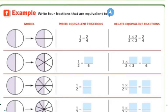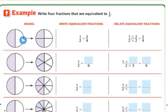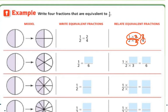Example: write 4 fractions that are equivalent to 1/2. Here's our 1/2 model — on this one I have 2 parts, and on this one I have 4 parts. Write an equivalent fraction. On this one it's 1/2 equals 2/4, because I essentially doubled it — I multiplied the top by 2 and the bottom by 2. 1 times 2 is 2, and 2 times 2 is 4. So 1/2 is equivalent to 2/4.